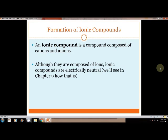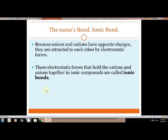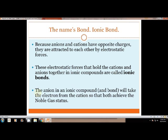Chapter 9 is probably the hardest chapter for the first semester because we have to learn how to name and formula write all compounds. Because the cations and anions have opposite charges, they're attracted to each other by an electrostatic force. These forces that hold them together in ionic compounds are called ionic bonds. The anion in an ionic compound will take the electron from the cation to achieve noble gas status.